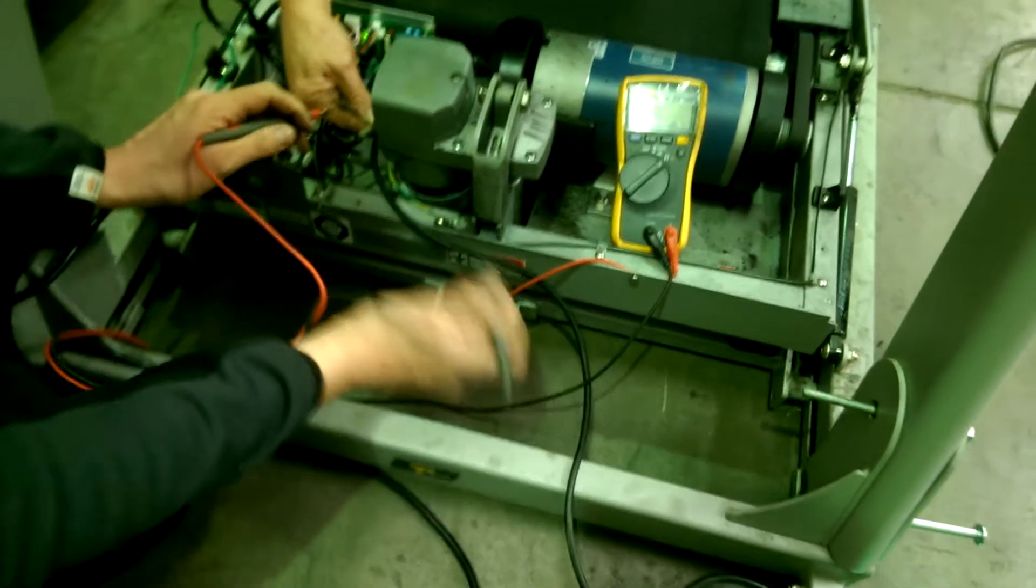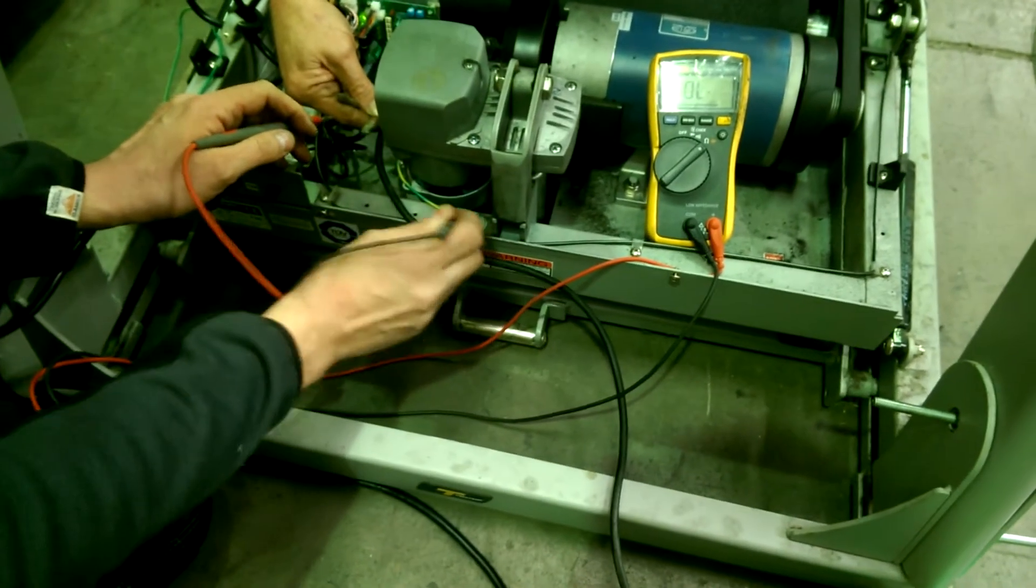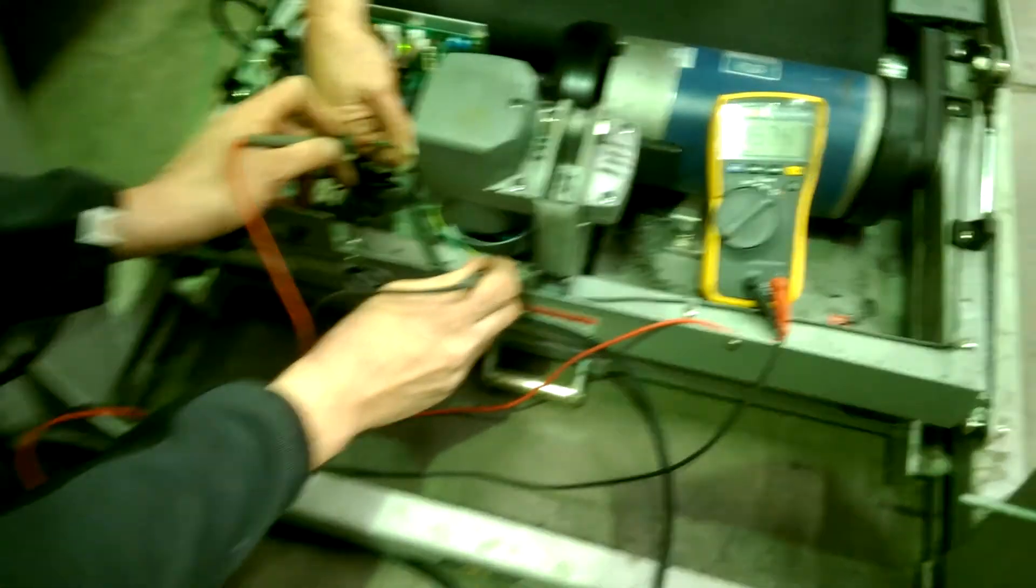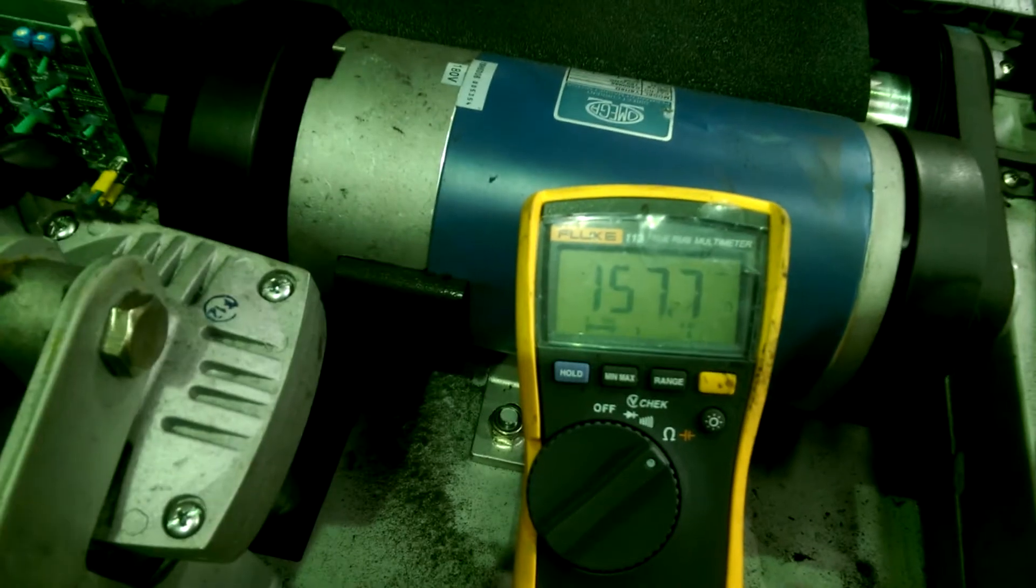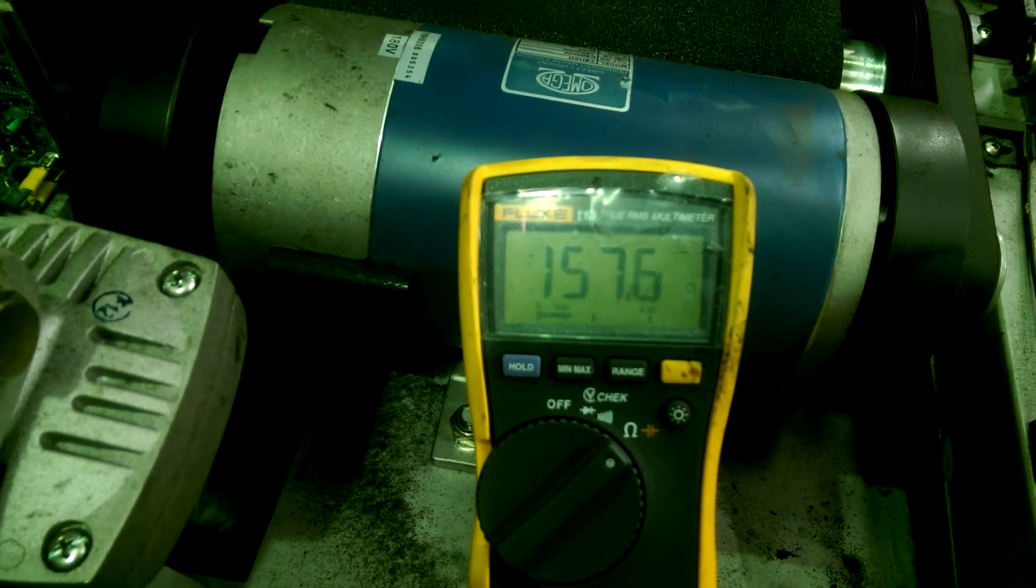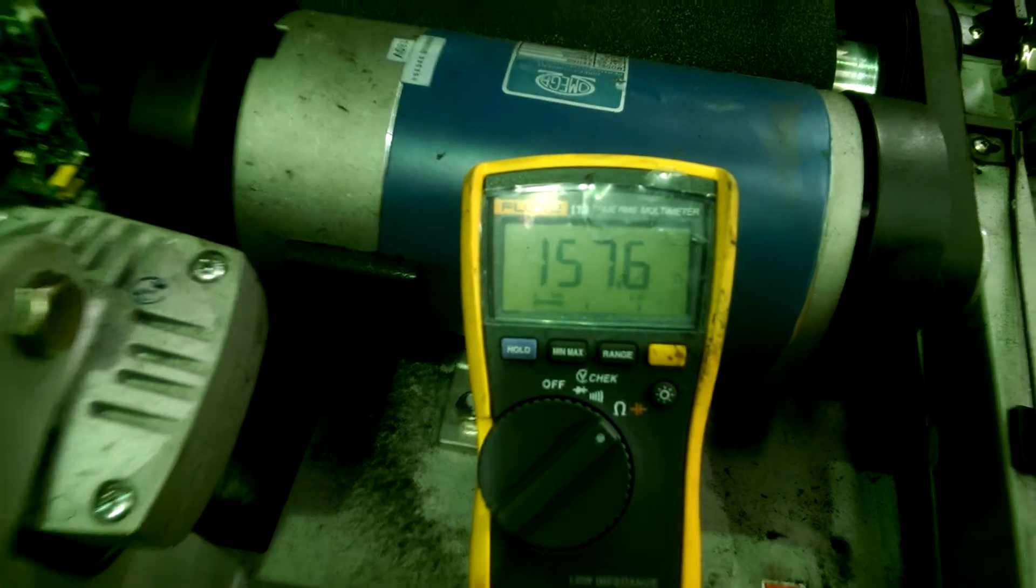We can test the windings to earth. So I'm going to put one probe on a good earth, which for example is there, and the other one on one of the parts of the windings. And this should be a really high resistance. It should be open circuit. And we're actually measuring 157.8 ohms, which is in the scheme of things really quite low.